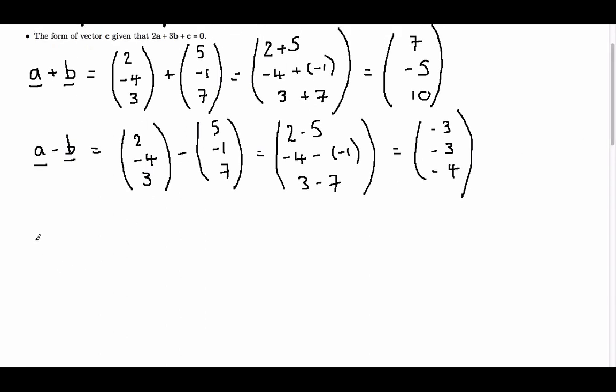Now finally, we have been asked to calculate 2a plus 3b plus c, and we have been asked to find c when these are all equal to the zero vector. So we will see that c is equal to the zero vector minus 2 lots of a minus 3 lots of b.